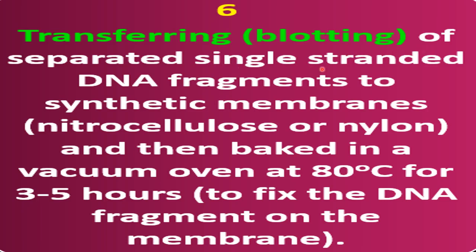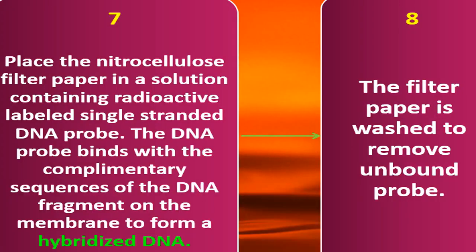The sixth step is blotting — transferring the separated single-stranded DNA fragments to a synthetic membrane made of nitrocellulose or nylon. The nitrocellulose or nylon membrane is kept over the gel where the DNA fragments have been separated, and the single-stranded DNA fragments transfer onto the membrane. It is then baked in a vacuum oven at 80°C for 3 to 5 hours to fix the DNA fragments on the membrane.